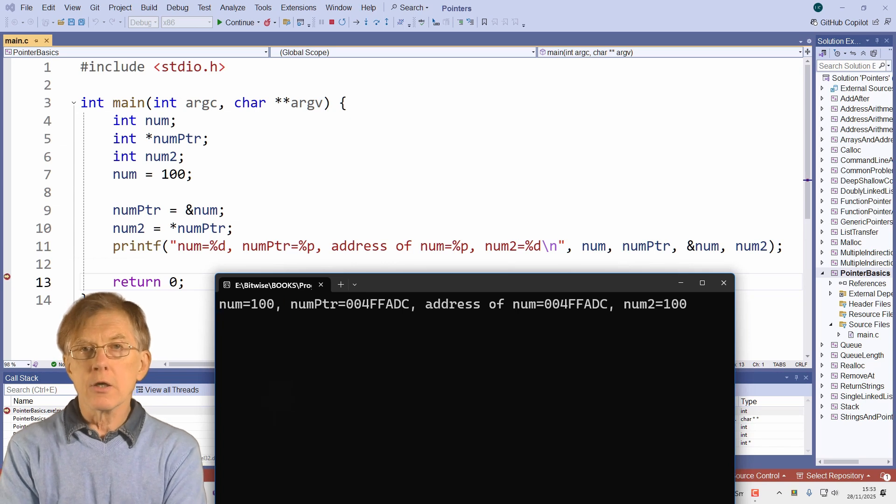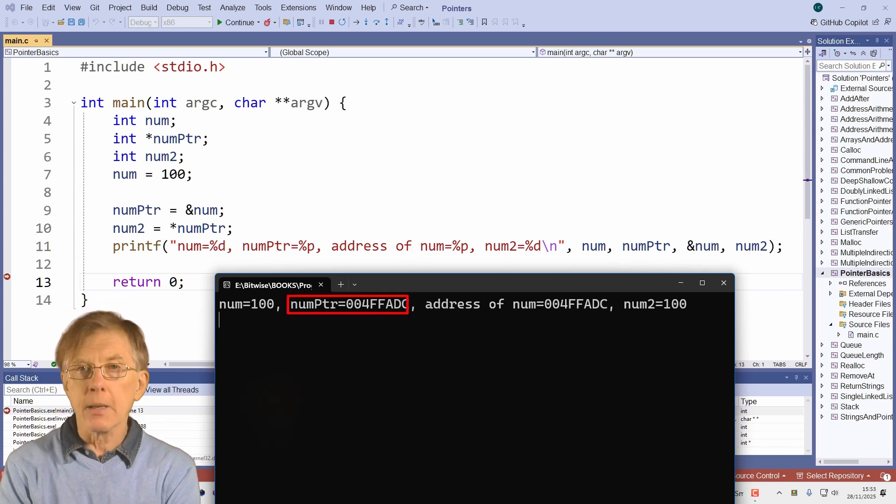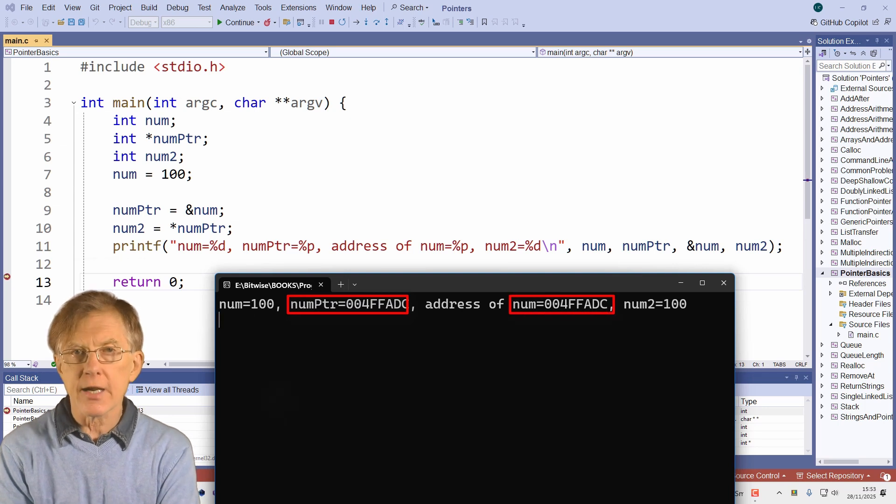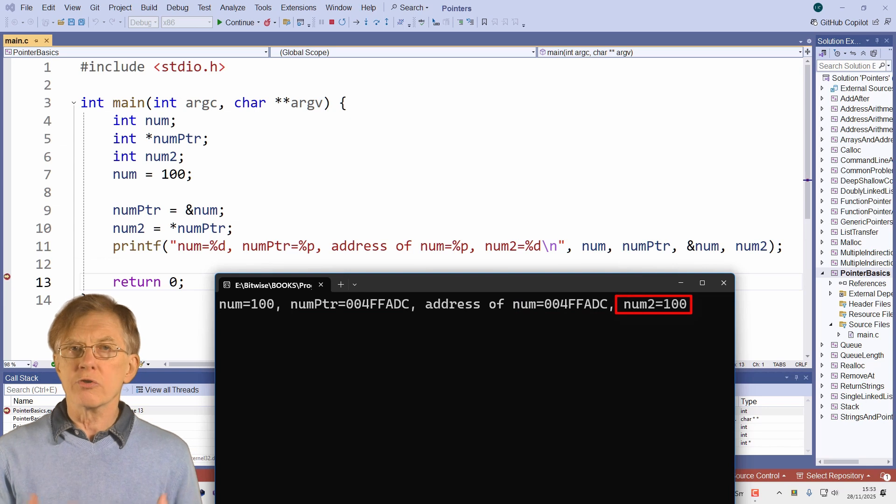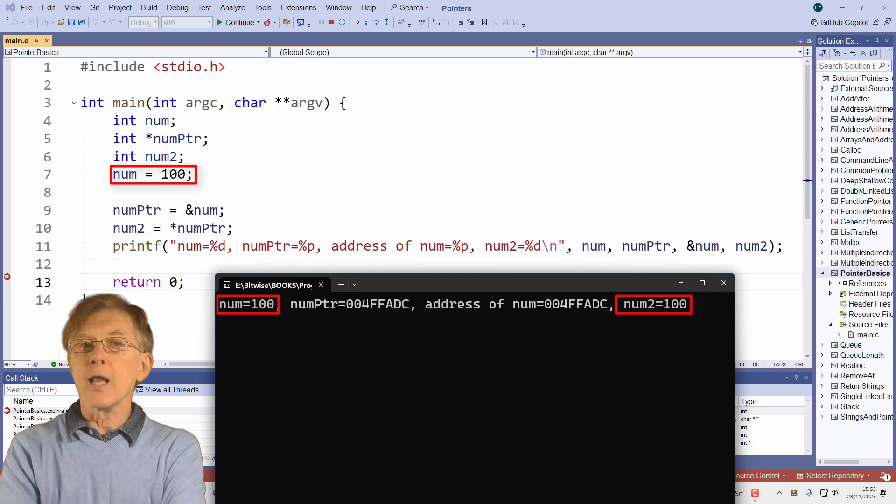The important thing to note is that the number stored by the pointer variable numptr is the same as the address of the variable num, and the value of num2, which was read from the address stored in numptr, is 100, the same as the value of num.